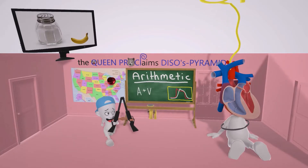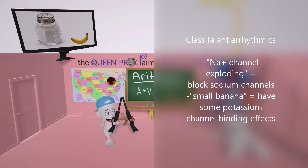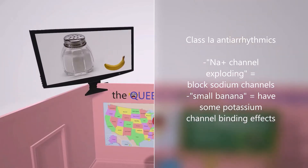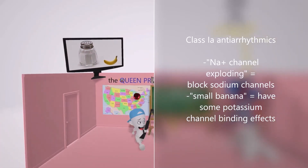Class 1A anti-arrhythmics act on sodium channels. In the classroom, they always have the sodium channel on — the sodium channel is about salt, which reminds us of sodium. And here it's exploding, so they block the sodium channel.